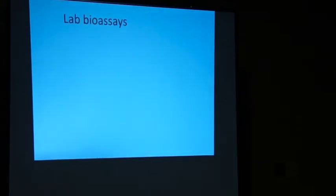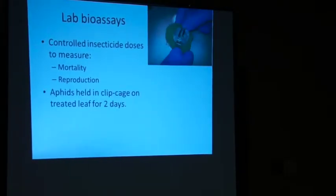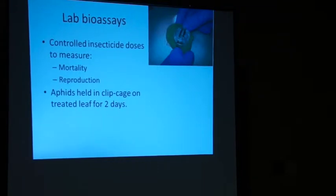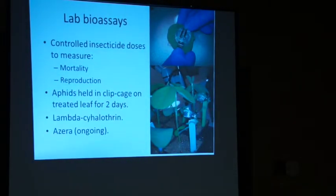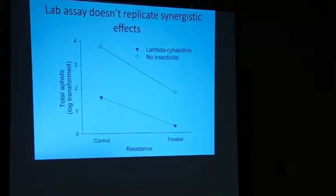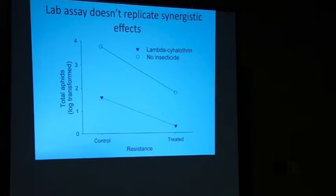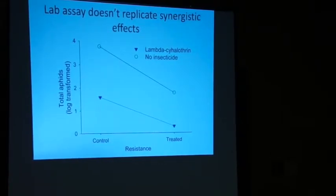After collecting field data, we conducted lab bioassays — taking a controlled dose of insecticide to measure mortality and reproduction. Aphids were placed in clip cages on a leaf and exposed to the insecticide for two days. We used lambda-cyhalothrin and Azera. The lab assay for lambda-cyhalothrin didn't show the same synergistic effects found in the field that first year — we're using these bioassays to figure out the mechanism behind the field results. Even without that synergistic effect, there were still fewer aphids in treated versus untreated cages.